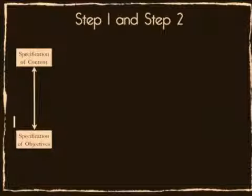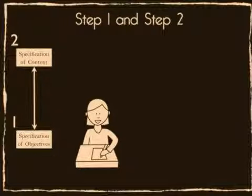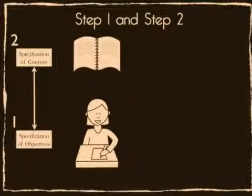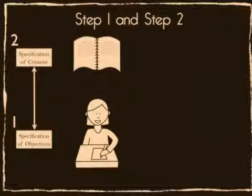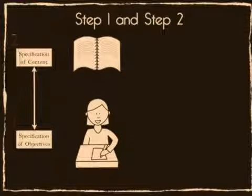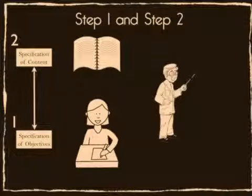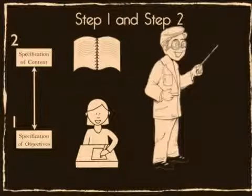Step 1 focuses on establishing students' learning objectives. Step 2 identifies the actual content being taught. Gerlach and Ely maintain that in an ideal world, objectives should be placed first. However, in reality, this is rarely the case, and thus both can occur simultaneously. Both Step 1 and Step 2 are to be determined by the teacher, who is the central decision maker in the entire process.